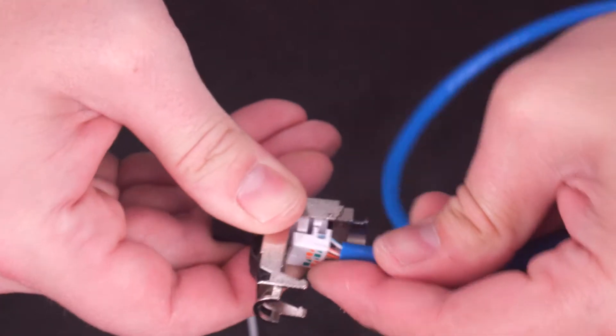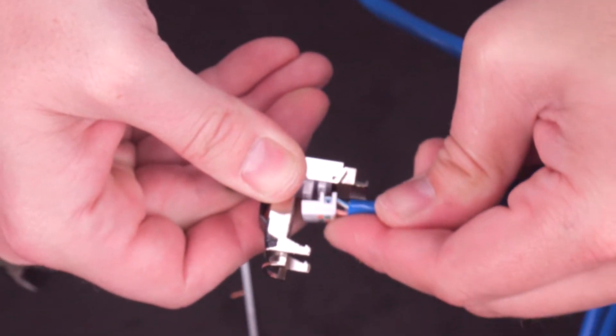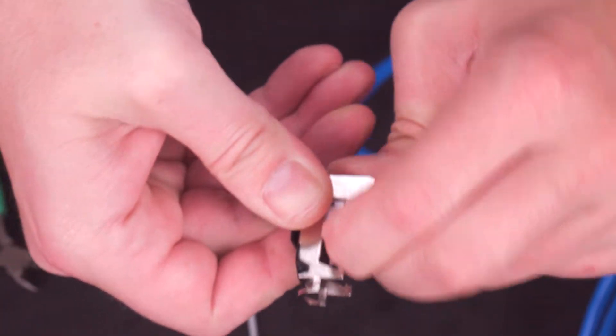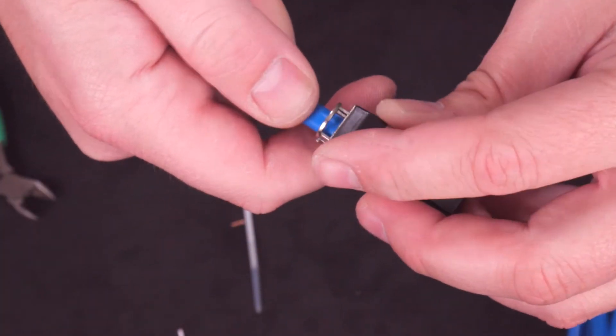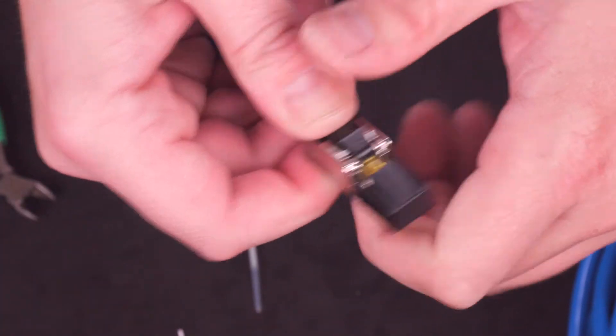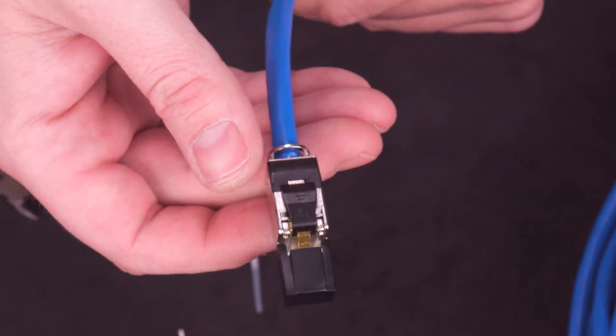Open the connector head shell and mount the insert into it, using a little bit of pressure for proper seating. Close the head shell, making sure to give a good solid click when you squeeze it. This is important.